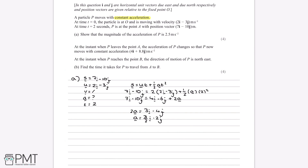We now have the acceleration as a vector, but the question wants us to show the magnitude is 2.5 metres per second squared — a single number. We can visualise this on a diagram: from a starting point O, the acceleration has a component of 3/2 along the i-axis, meaning we move right by 3/2. So we draw 3/2 in that direction.